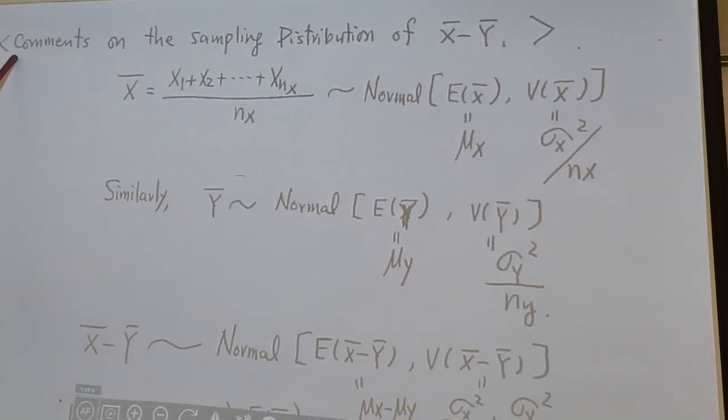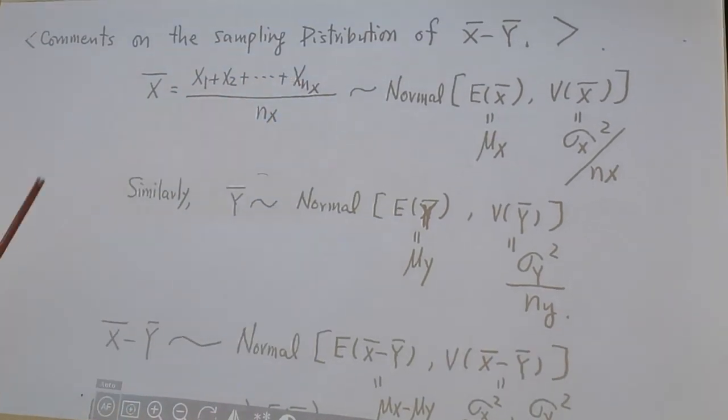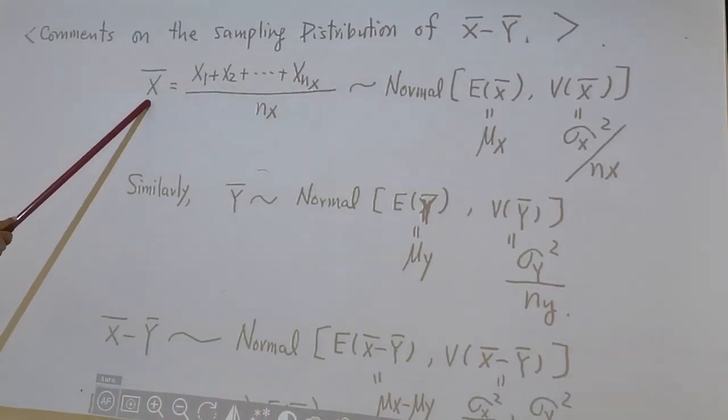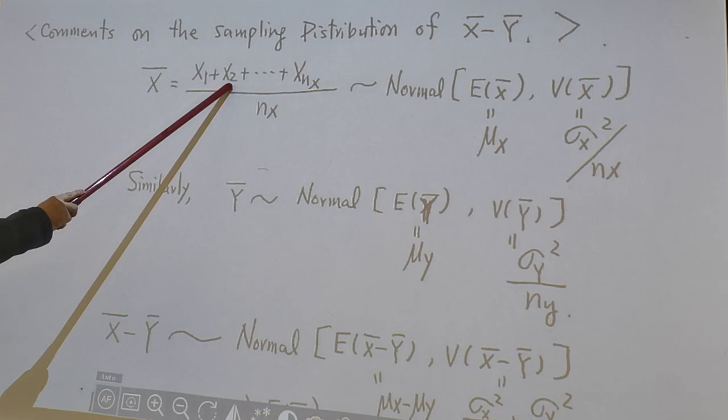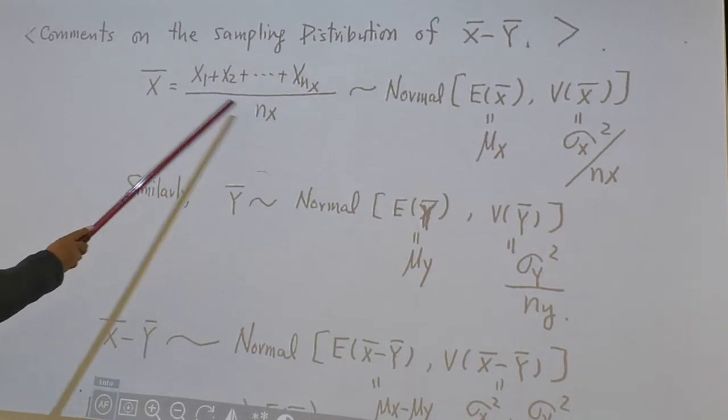Next one, let's look at comments on the sampling distribution of x-bar minus y-bar. We know x-bar is x1 plus x2 plus all the way up to xnx divided by nx. This is our x-bar.